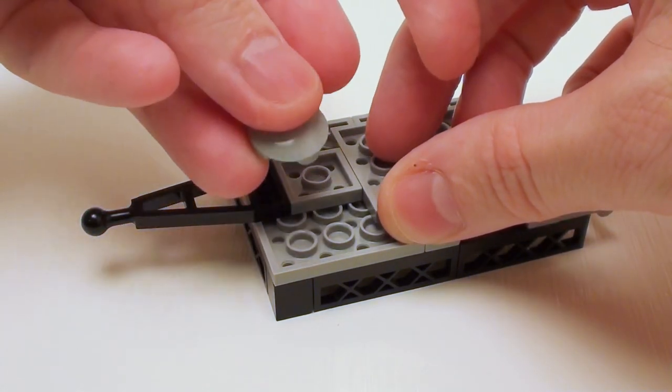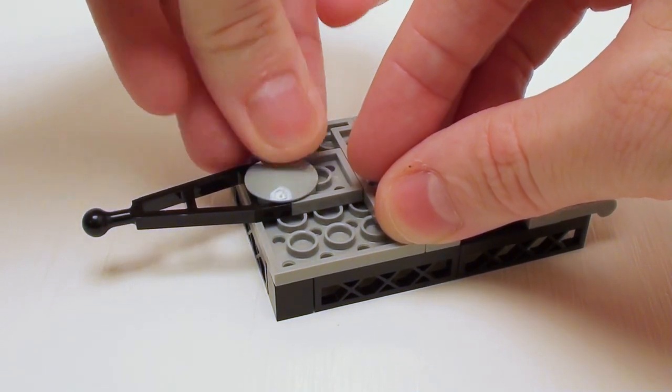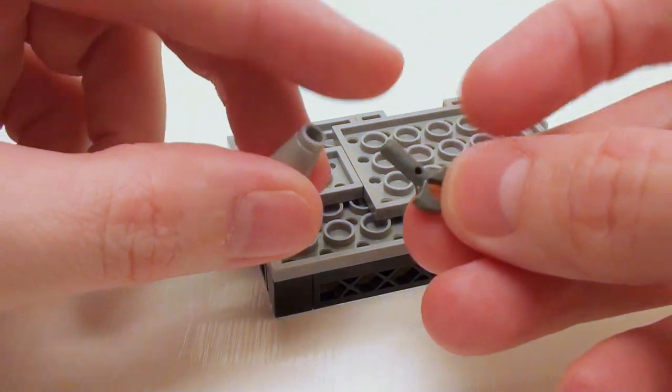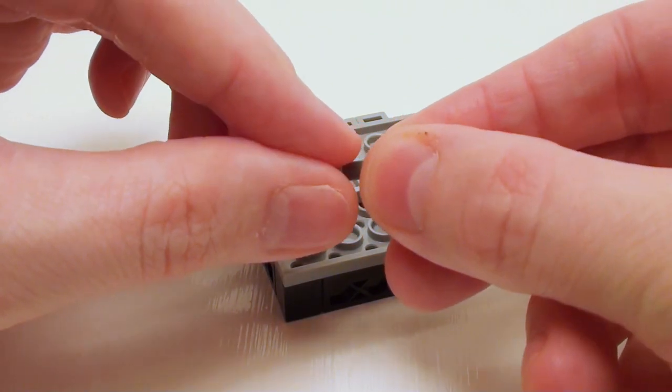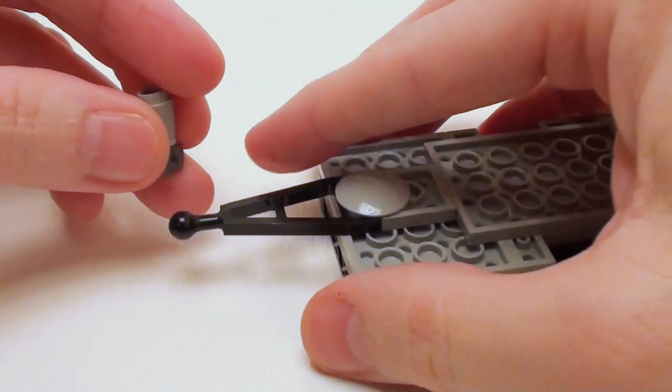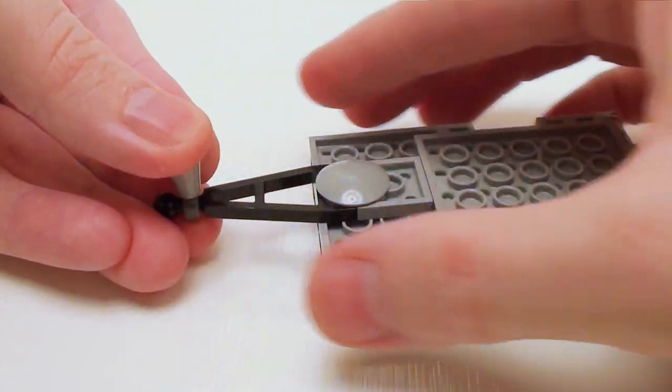I want to stick a round 2 by 2 wider plate in this area. Take a 1 by 1 nose cone and a stick with holder. Place this stick with holder right inside the nose cone, and we're going to attach this on this portion of the hitch. This is going to be our stabilizer jack.